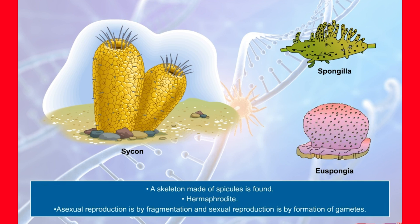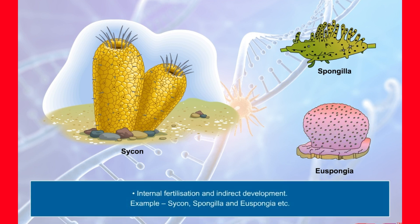A skeleton made up of spicules and spongin fibers is found over the body. Sexes are not separate — that is, they are hermaphrodite. Asexual reproduction takes place by fragmentation and sexual reproduction by formation of gametes. Fertilization is internal and development is indirect. Sycon, Spongilla (freshwater sponge), and Euspongia (bath sponge) are some examples of Porifera.